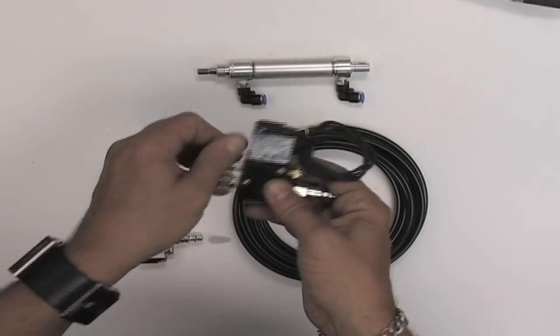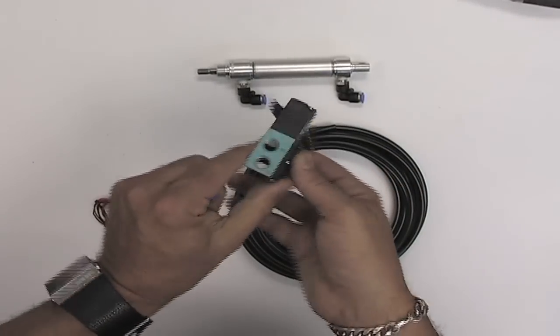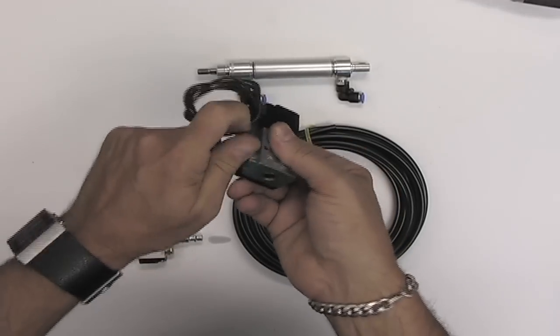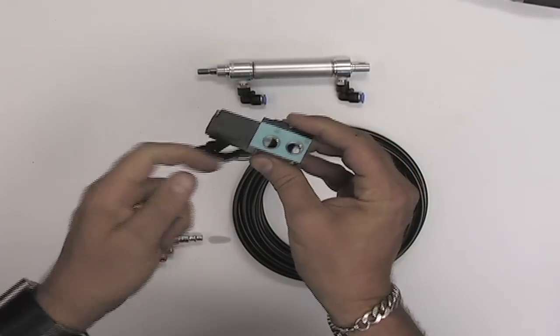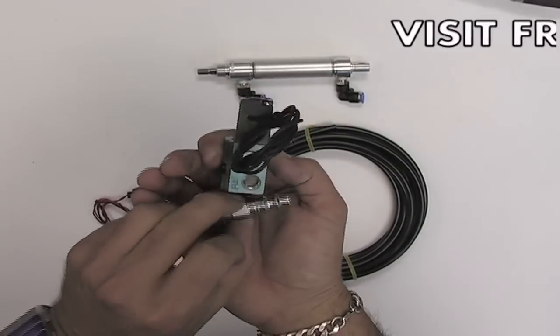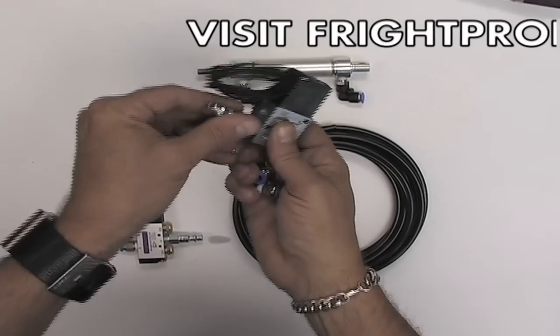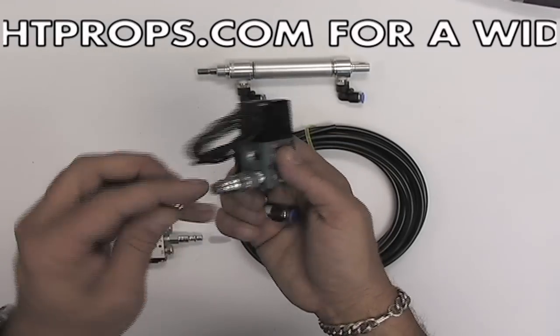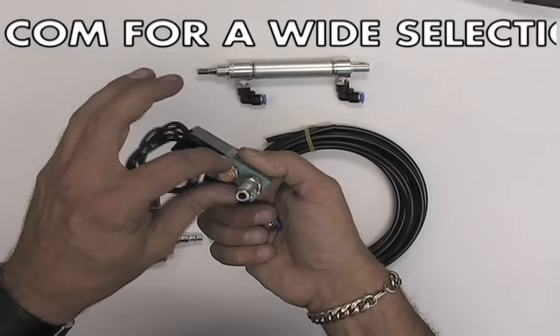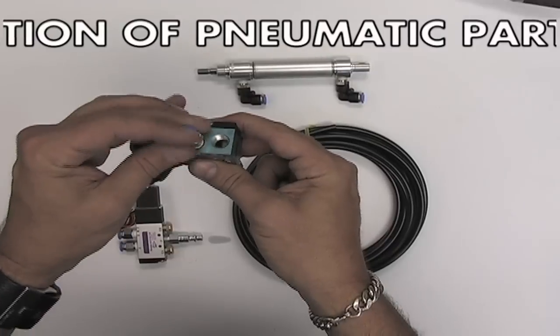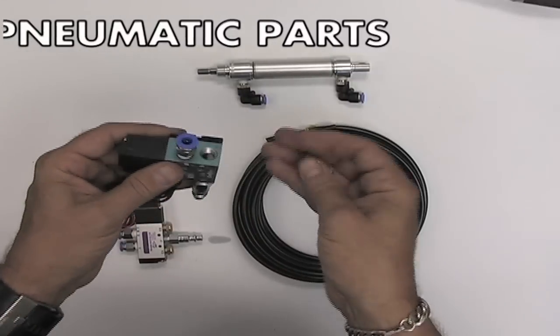When you buy a solenoid alone, it comes with no fittings and open ports. The kit gives you a quick connect that's going to go to the compressor air source, an exhaust or debris muffler, and fittings to go out to the cylinder.